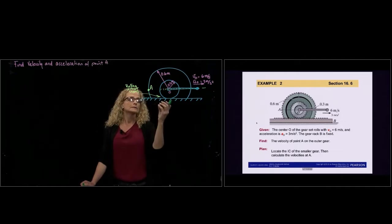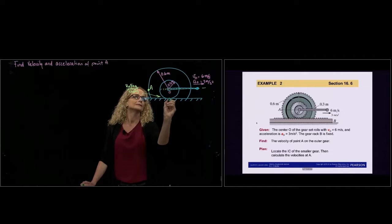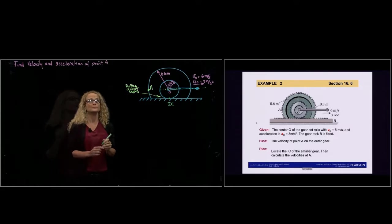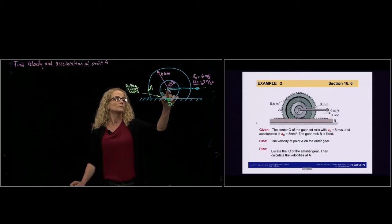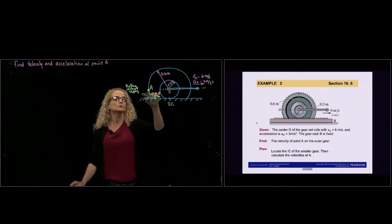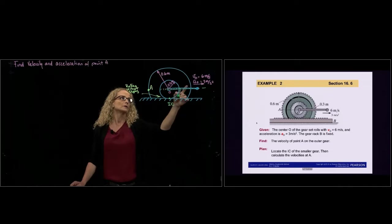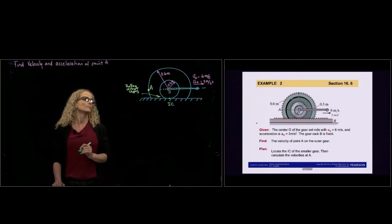Since those are gears that roll without slipping, this instant center of rotation is right in the point of contact. We are given the velocity of the center, and we are asked to find the velocity of A. We could use the information that the system is rolling over this point, but we have to find the angular velocity and angular acceleration of these both gears.